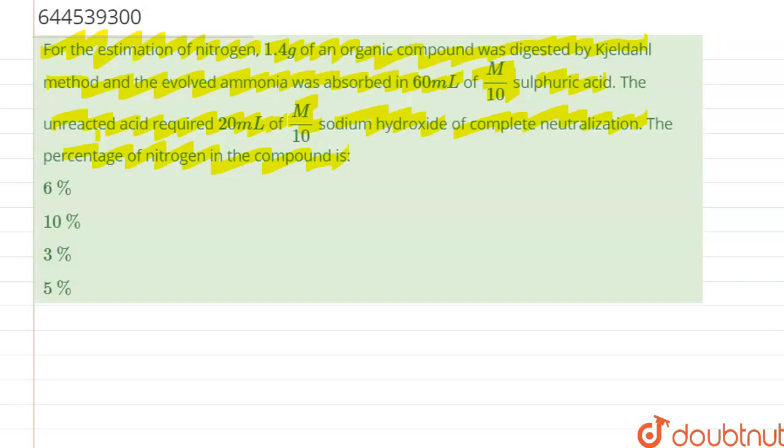Basically in Kjeldahl method we know that the percentage of N is equals to 1.4 into Nv by W.